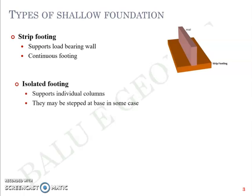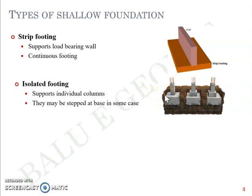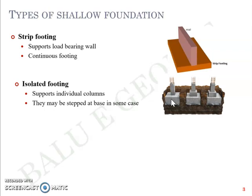The next one is an isolated footing — they actually support the column loads. Columns are what we call a pillar in Indian practice. They could be stepped at the base or in some cases a plain structure. You have the column supported by an individual isolated footing, so it is not a strip but rather rectangular or square in plan. For example, one footing would be around 2 meters square and would take the load from a column of 30 cm by 30 cm — just to give you a sense of the dimensions.